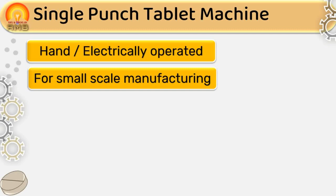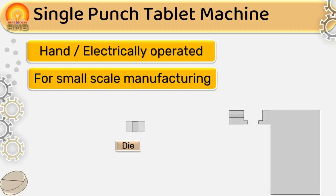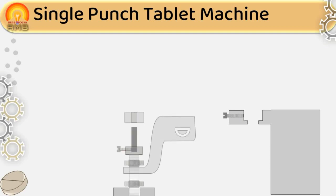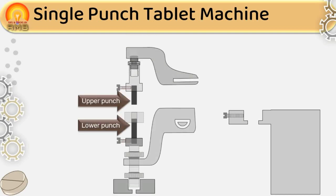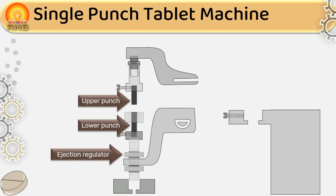A single punch tablet machine has different parts. First is a die — granules can be filled in the die through the hopper and these granules are compressed in the die between the lower punch and upper punch. Next are the lower punch and upper punch — these punches come together in the die to compress granules. Next is the ejection regulator, which is a set of nut and screw to adjust the position of the lower punch so that at its highest position, its upper surface coincides with the upper surface of the die, assuring easy removal of the tablet with movement of the hopper shoe.